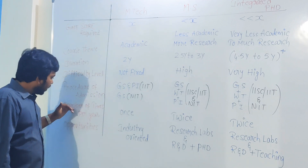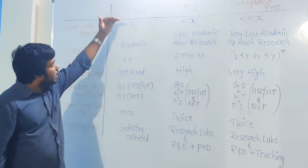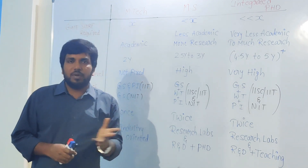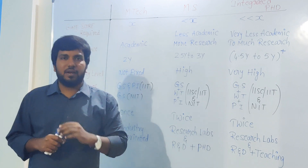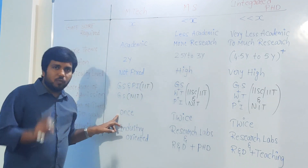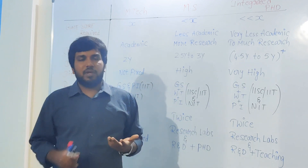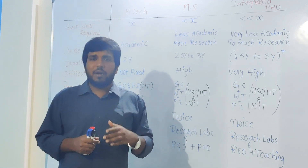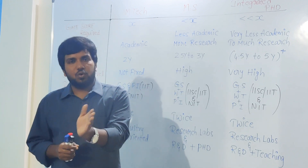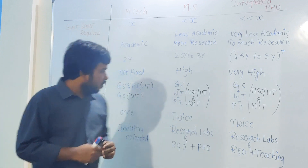Regarding the number of times per year a student can apply: MTech admissions are taken in the month of July — results come out in the second week of March, followed by the interview process, and the final admission call from IIT or NIT comes mostly in July. So for MTech it is only once per year.